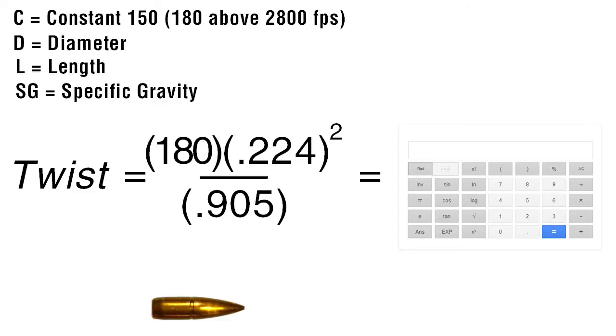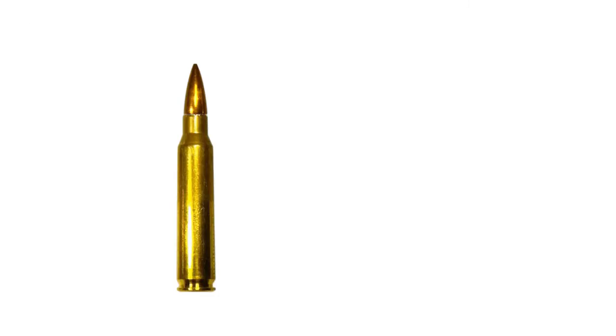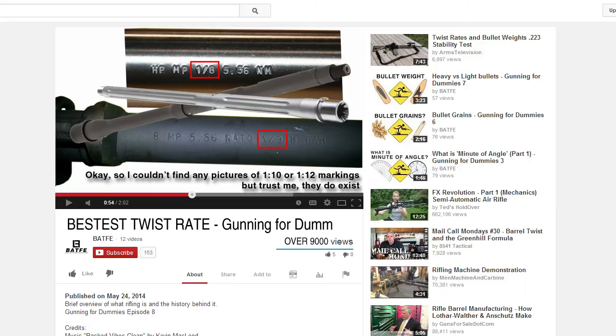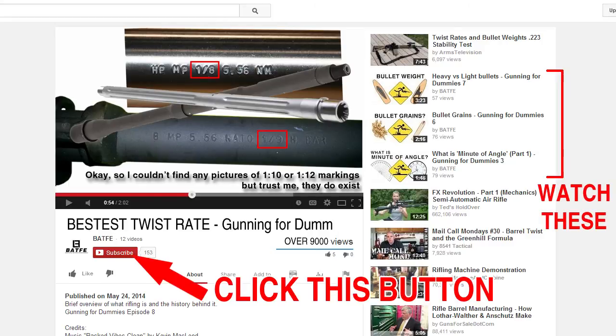But when we plug everything into the calculator, we get 9.97. So the optimal twist rate for our average 223 bullet rounds up to 1 in 10, which, recalling from earlier in the video, 1 in 10 is one of the standard barrel twist rates for an AR-15.